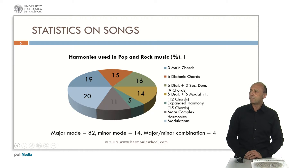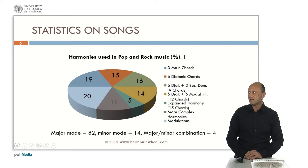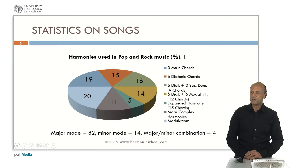Here we have our first figure with statistics on songs. We can see that 19% of them are composed with only the three main chords. 15% with at most the six diatonic chords. 16% with diatonic plus three secondary dominant chords. 14% with diatonic plus modal interchange chords, that is a maximum of 12 chords. Only 5% with an expanded harmony. 11% with more complex harmonies. And 20% of the songs contain a modulation. From now, we are going to consider the 80% of songs not containing a modulation.